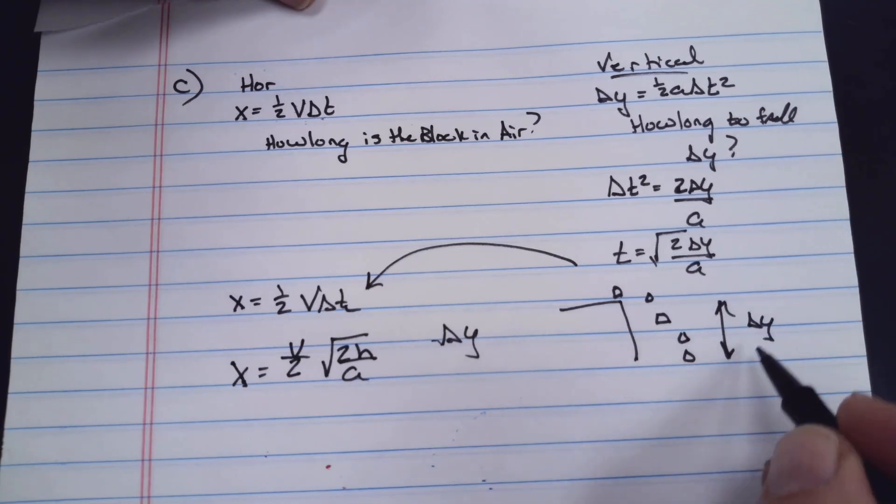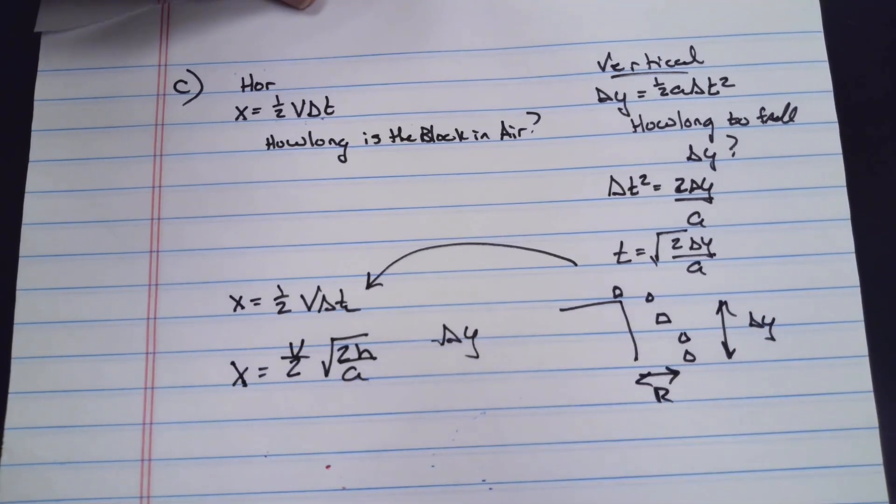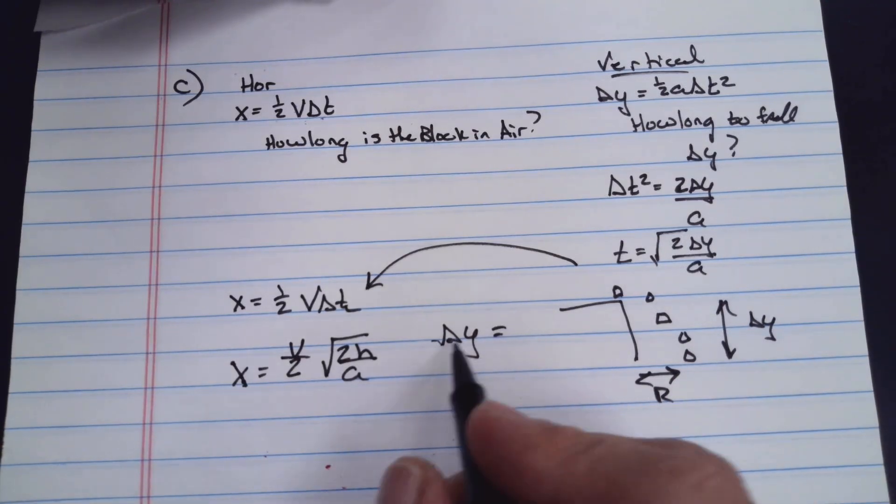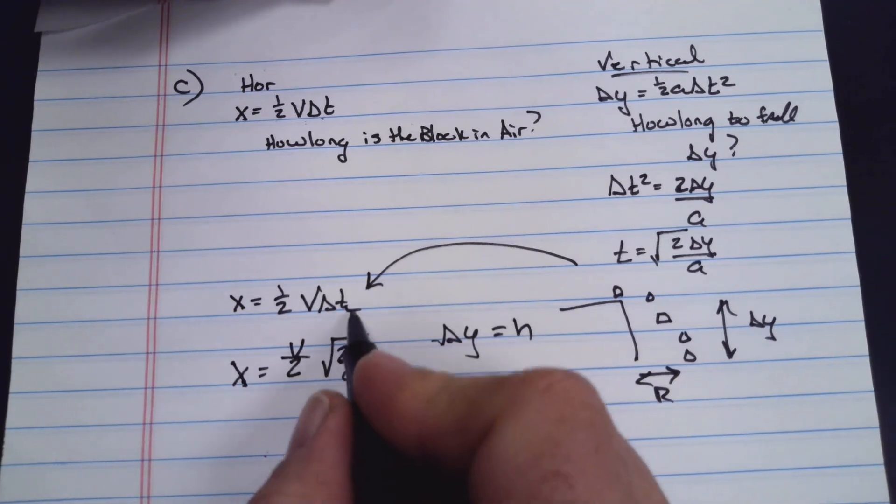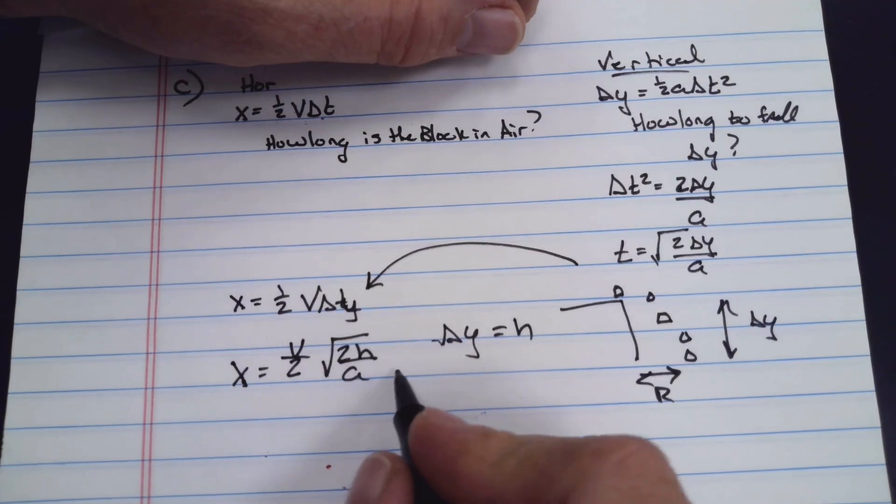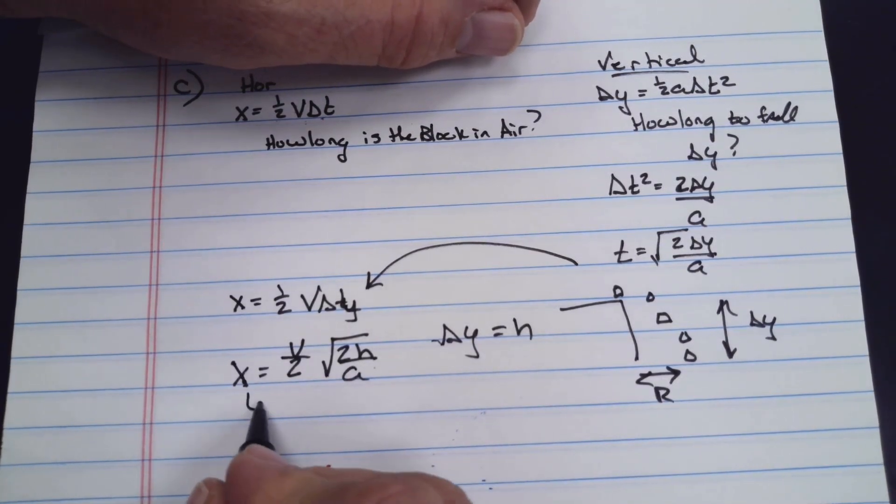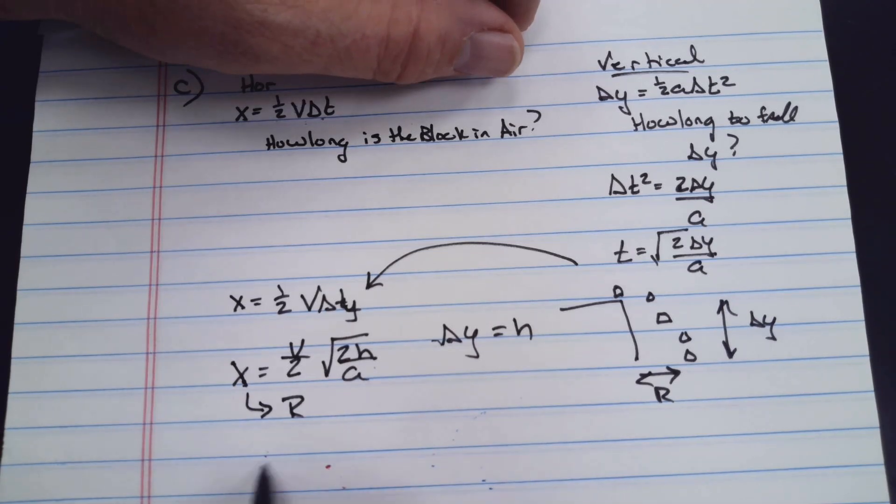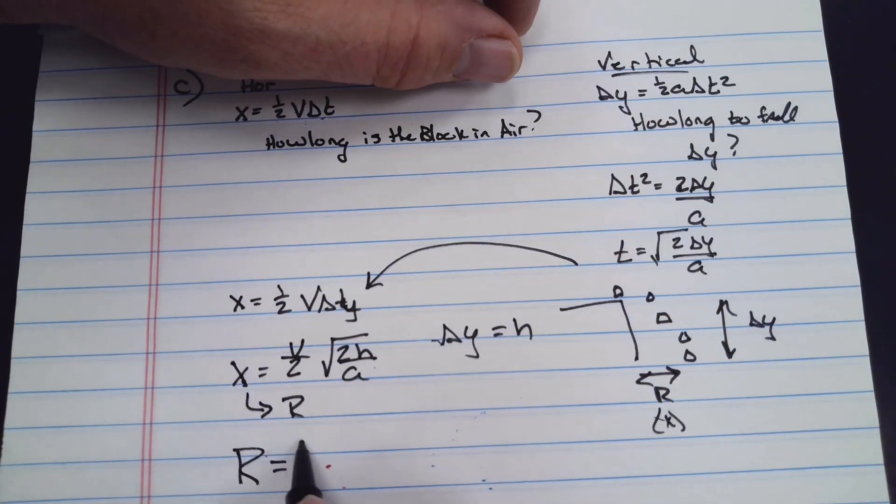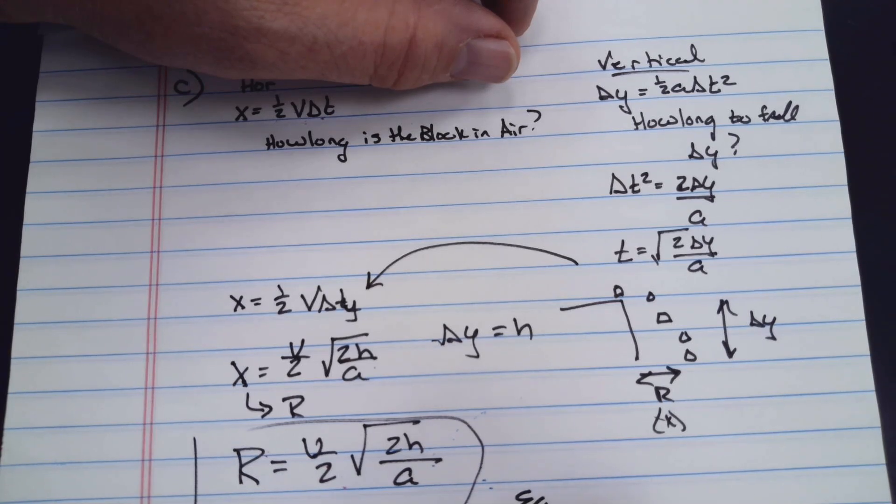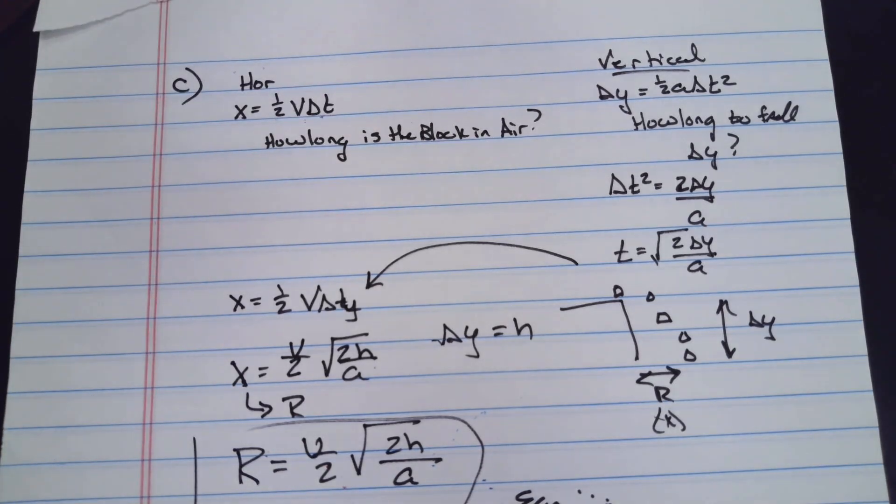I used change in y because that is the distance. Here's my change in y, this is R. My change in y I rewrote as H, and R is really x because that's what this distance is. That makes the equation R = ½√(2H/a). The last one, part D, they say they're going to make this part rough by putting sandpaper on it.